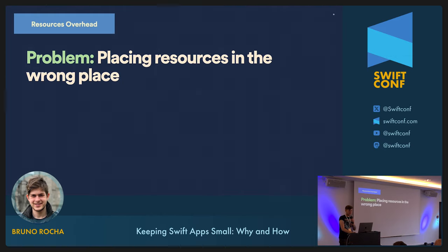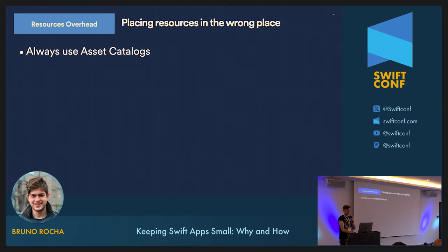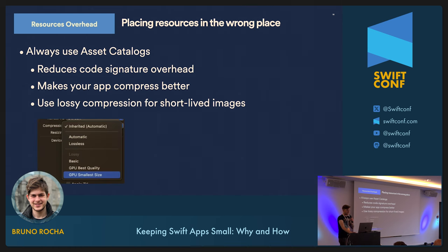Where you place resources can also be a problem. In iOS, you should always use asset catalogs — never have freestanding files. The most relevant reasons are: first, it makes your code signature footprint smaller; and second, you get better compression from Apple when you submit to the App Store. One very underrated feature of asset catalogs is that you can configure how individual files are compressed — if you have an image that shows up for a very short time, you can save more size by picking one of the lossy options. Of course, that reduces quality, so be careful.